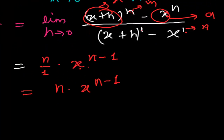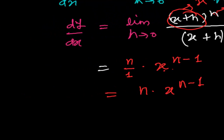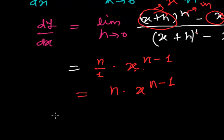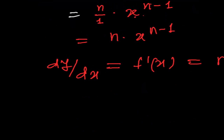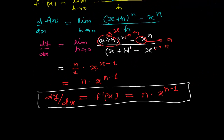So we can now write that dy/dx, or f'(x), equals n times x to the power n minus 1. We have proven the result. It is quite straightforward, and using this formula we can now solve many problems related to this form.